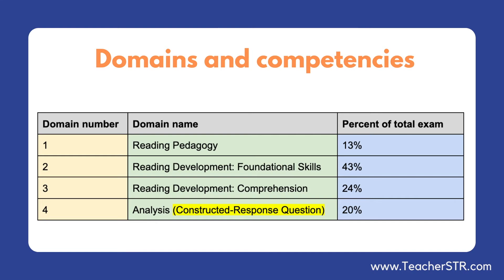Domain 1 focuses on reading pedagogy and accounts for 13% of the total exam. Domain 2 focuses on foundational reading skills and counts for 43% of the exam. Domain 3 focuses on reading comprehension and accounts for 24% of the exam. Domain 4 is the constructed response section that accounts for 20% of the exam.